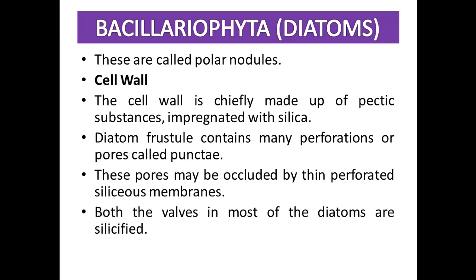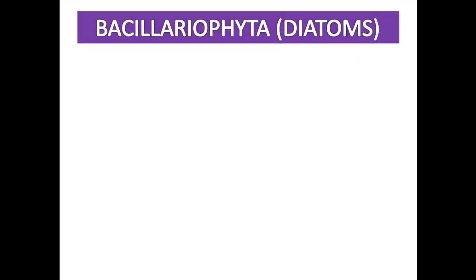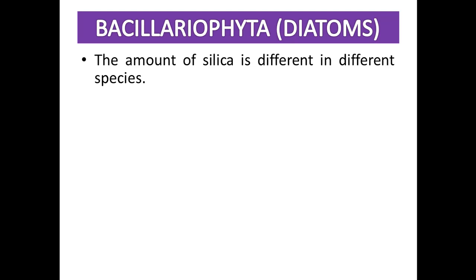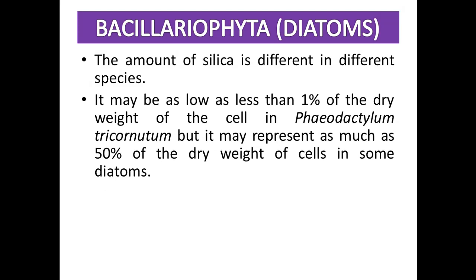Both valves in most diatoms are silicified. The amount of silica differs among species — it may be as low as less than 1% of the dry weight of the cells, but it may represent as much as 50% of the dry weight in some diatoms.